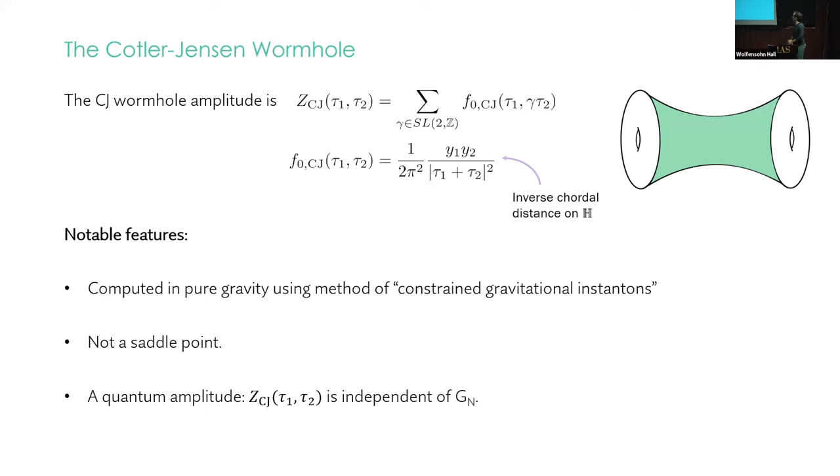So the Kotler-Jensen wormhole amplitude is in this language written as a Poincaré sum where the seed is a simple function. Again, it's the inverse chordal distance on hyperbolic space. So what are some notable features of this? The first is that it was computed using an unfamiliar method of constrained gravitational instantons. They had to do this because it's not a saddle point, as we mentioned before. And notably, this amplitude is independent of G Newton. So their answer had no dependence on the central charge, which is interesting and puzzling and reflects the fact that it's not a saddle point.